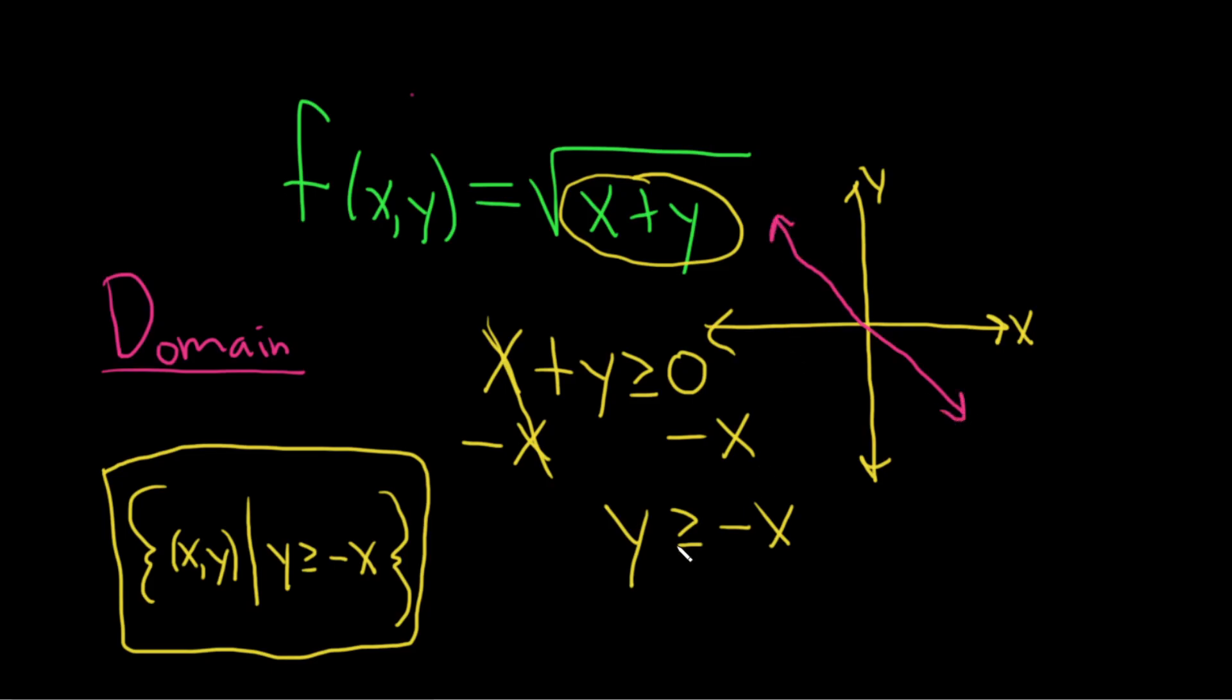And we're looking for all of the ordered pairs such that y is greater than or equal to negative x. That's up here. It's greater than or equal to. So this would be the sketch of the domain of this function in the xy-plane. The domain of this function is a subset of the set of all ordered pairs, right? It's just this part here.